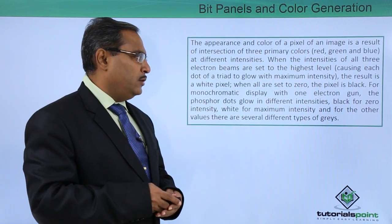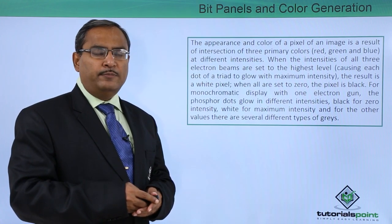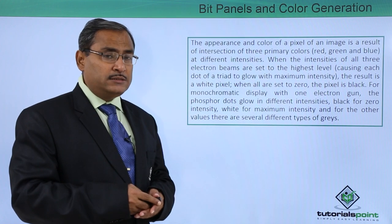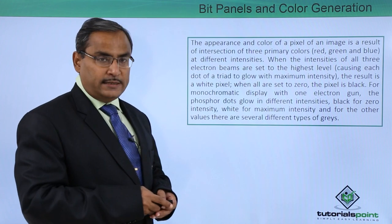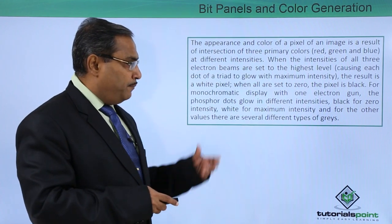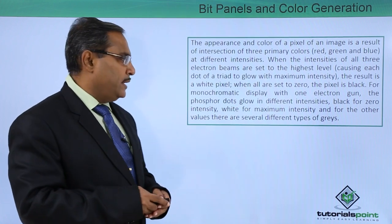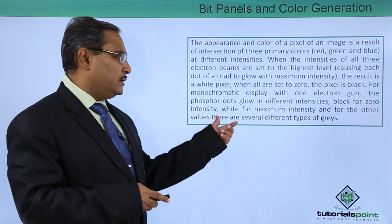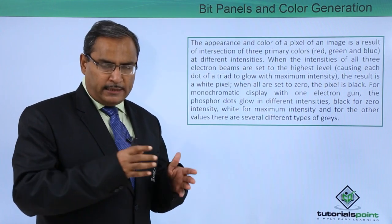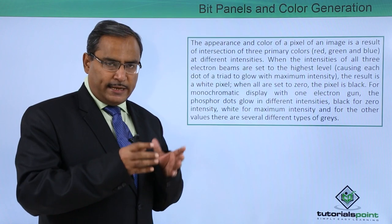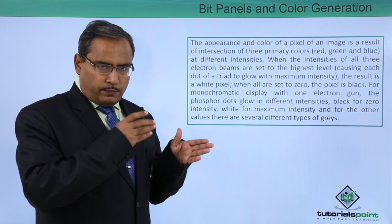For a monochromatic display with one electron gun, there is no need to have red, green, and blue — three different electron guns. Only one gun will be there. The phosphor dots glow at different intensities: black for 0 intensity and white for the maximum intensity. For other values, there are several different types of greys. Depending on and varying the intensity of the electron beam, we can have other grey levels ranging from black to white.